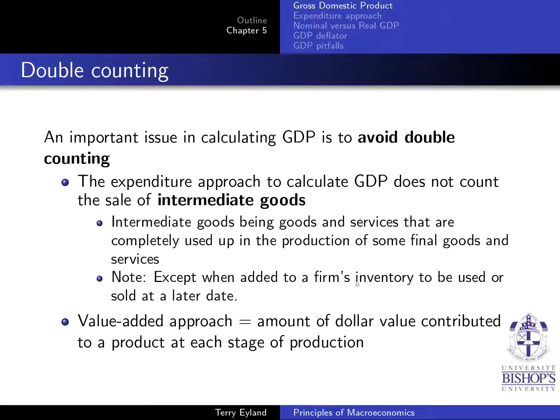If something was produced and used up in the production process in a given year, that intermediate good should never be counted — otherwise it's double counting.